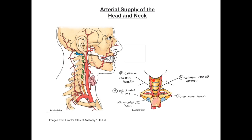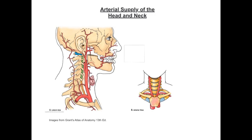At about the level of C4, which correlates with the upper margin of the thyroid cartilage, we see the common carotids terminating into their two terminal branches. Looking from the lateral aspect at the right side of the neck, we see the brachiocephalic trunk terminate into the right subclavian and the right common carotid artery. At about the level of the 4th cervical vertebra, the common carotid artery terminates, continuing as an external carotid artery and an internal carotid artery.